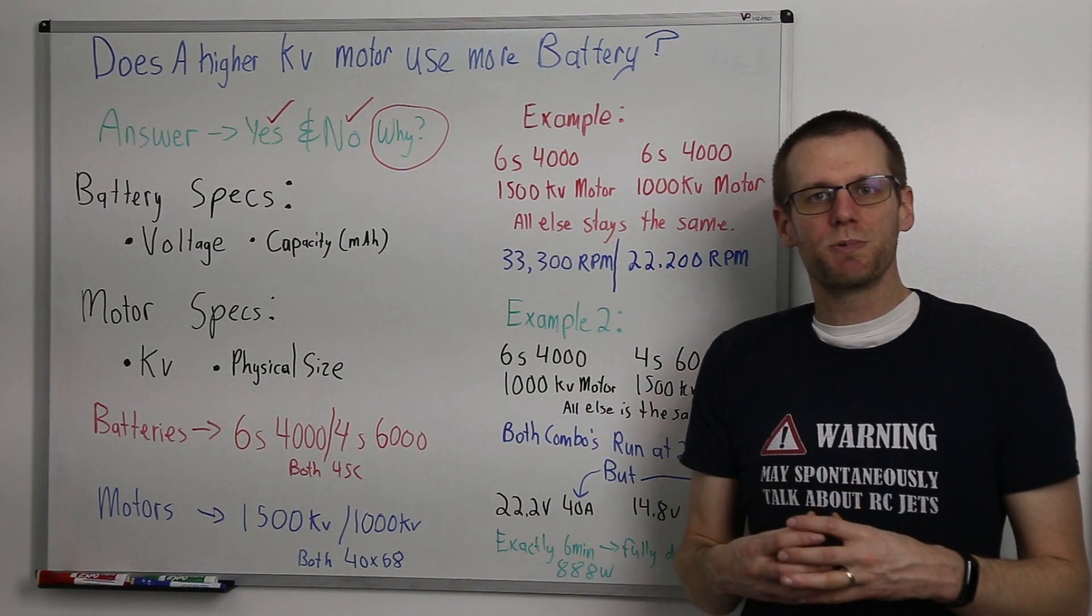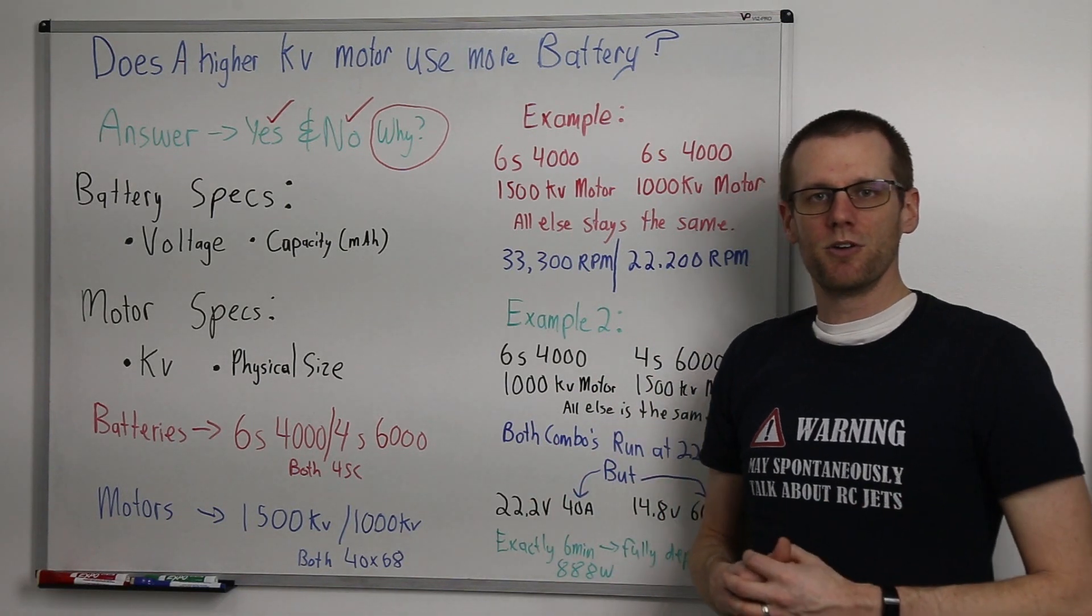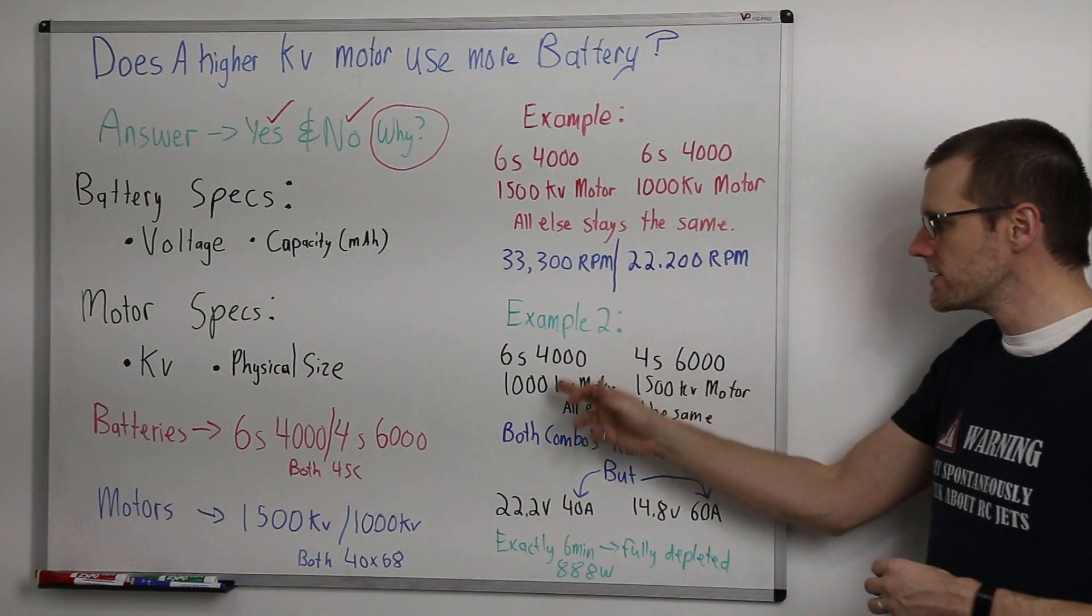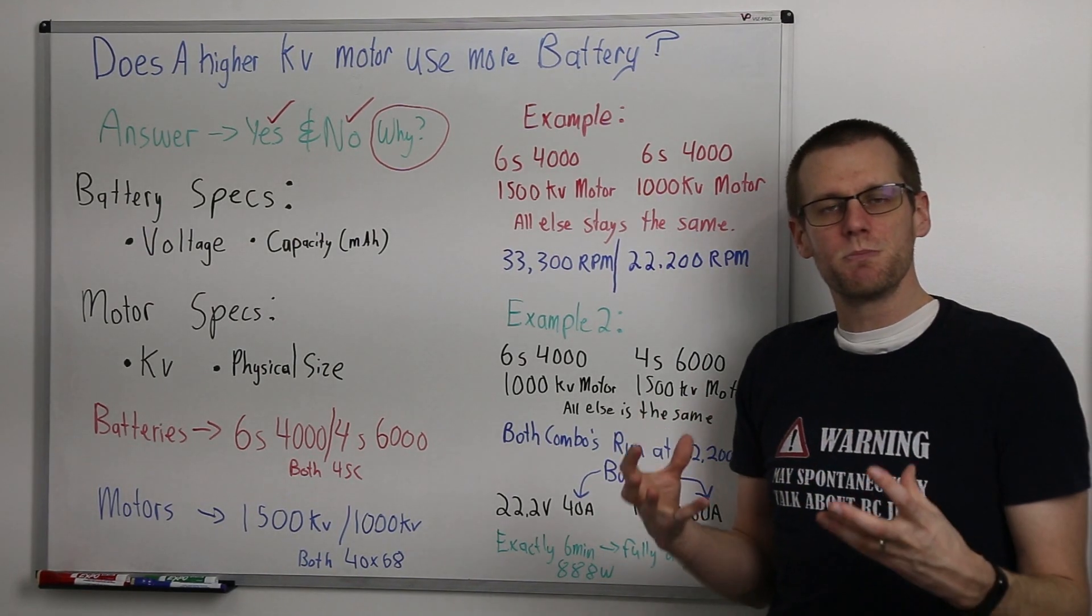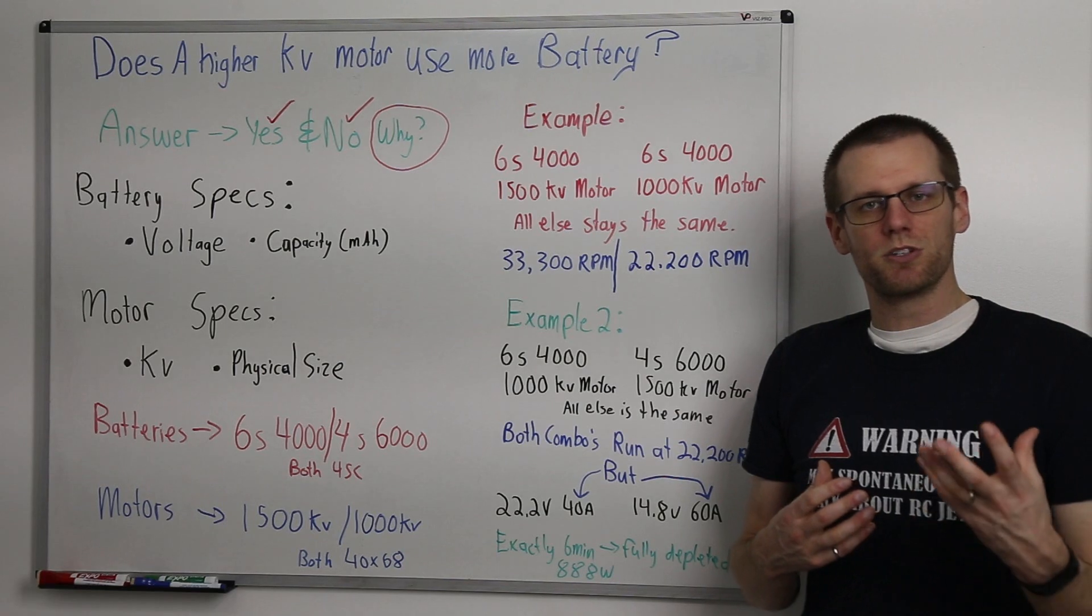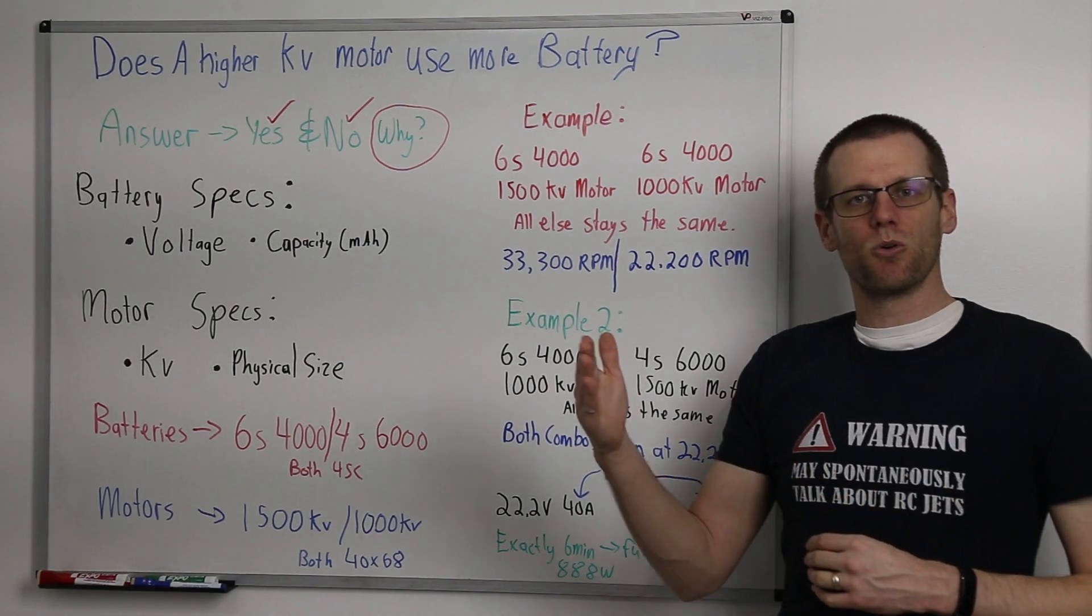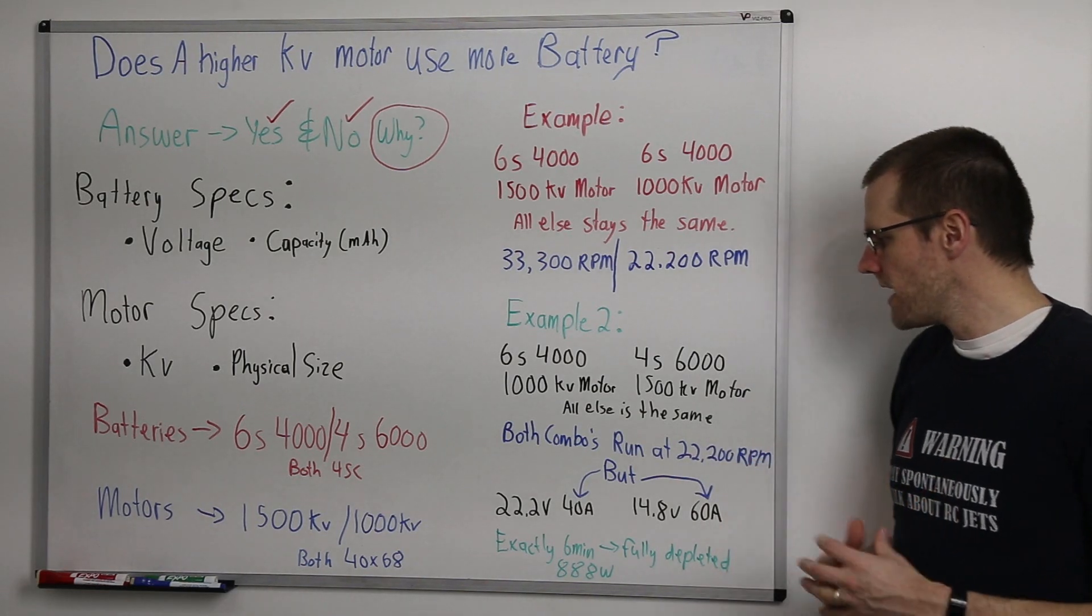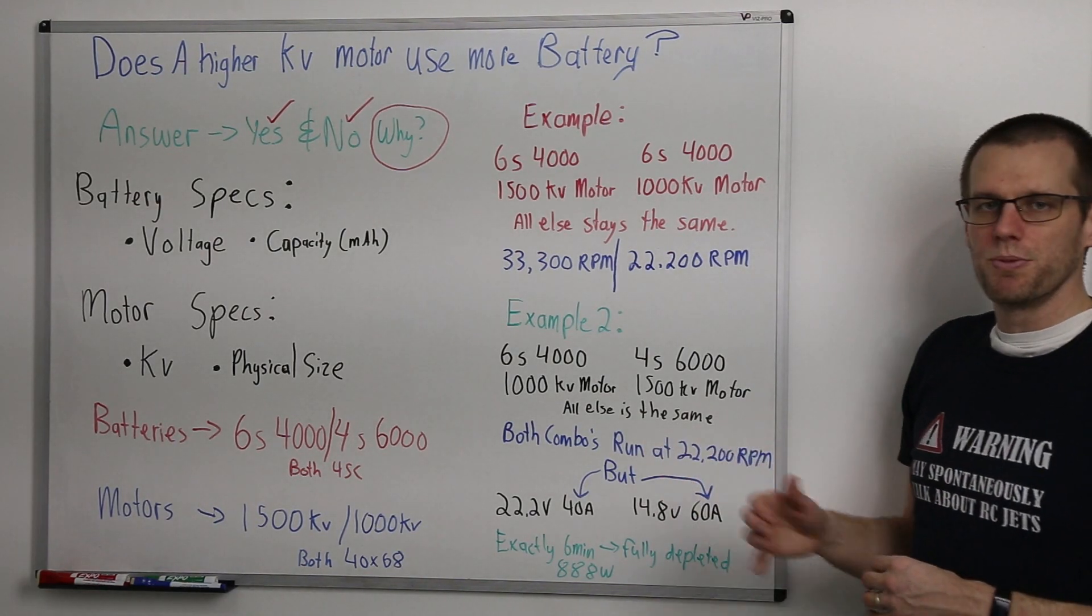The reason why we have kV options and so many of them under manufacturers that have the same exact motor size is because of this scenario. We're able to optimize the power system by selecting the voltage that we want to run and then selecting the corresponding winding from the motor manufacturer to end up with the same overall RPM.